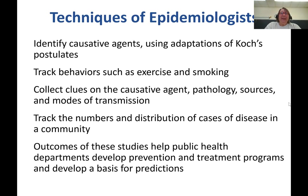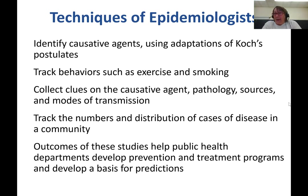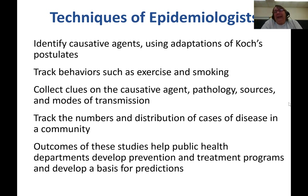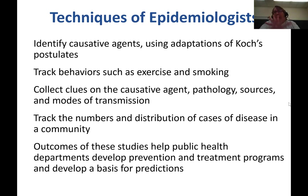Epidemiologists identify causative agents using Koch's postulates or adaptations for diseases where they can't be applied directly. They track behaviors like exercise as a positive factor and smoking as a negative factor, and look for clues on causative agents including pathology, sources, and modes of transmission. They track the numbers and distribution of disease in a community, and outcomes help public health departments develop prevention, treatment programs, and predictive models for how a disease will spread.